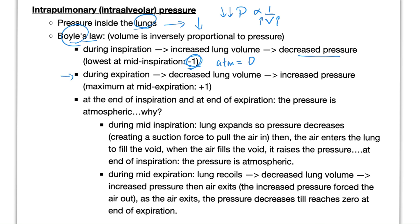The opposite happens during expiration. When you expire, you're decreasing your lung volume, so you're increasing the pressure according to Boyle's law. Therefore, your intrapulmonary pressure will rise above the atmospheric pressure. When it rises above atmospheric pressure, this pushes the air out. At the end of inspiration and at the end of expiration, the pressure is atmospheric inside your lungs.